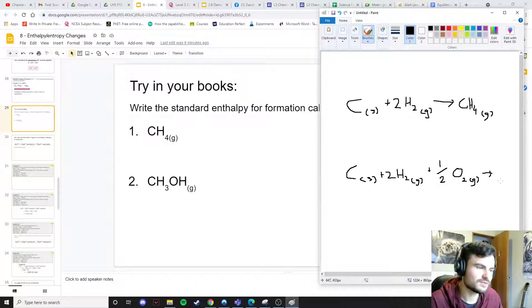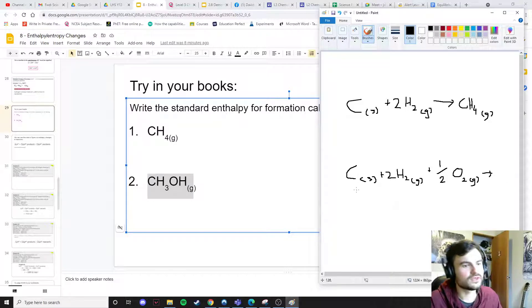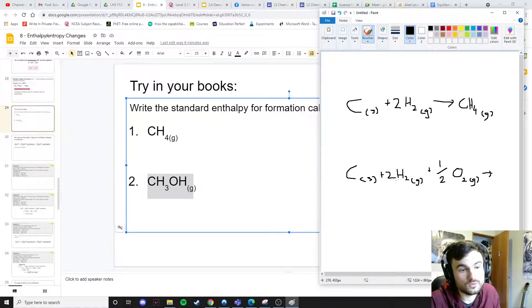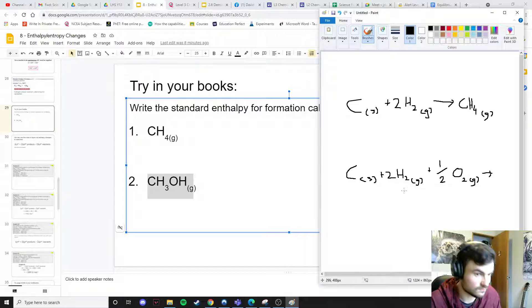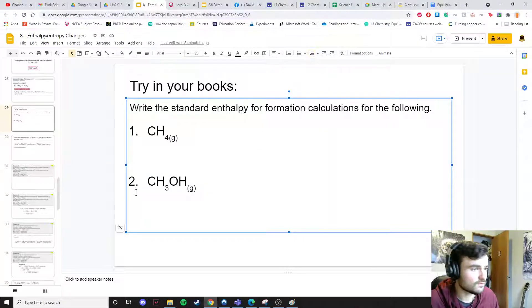This is going to make our methanol. So carbon solid plus two lots of H2 gas which is four hydrogens total and then half of an O2 molecule which is just one oxygen atom. This is the standard enthalpy of formation for these molecules.